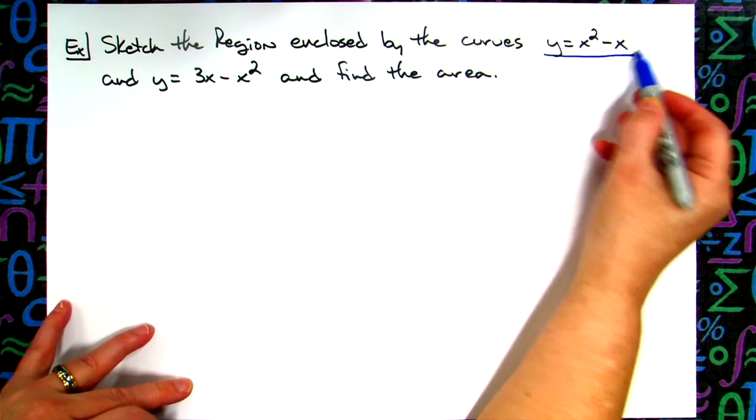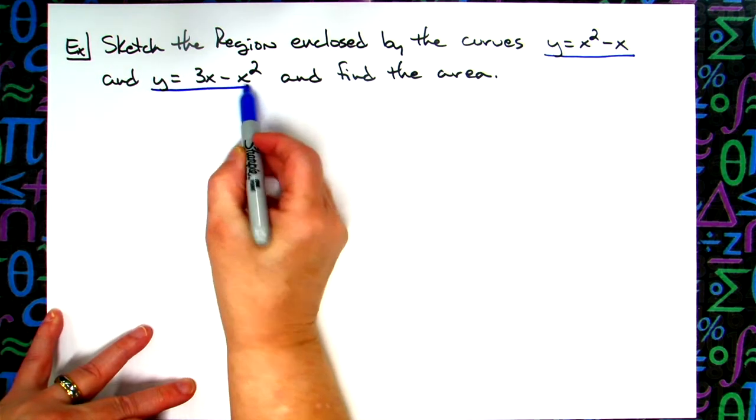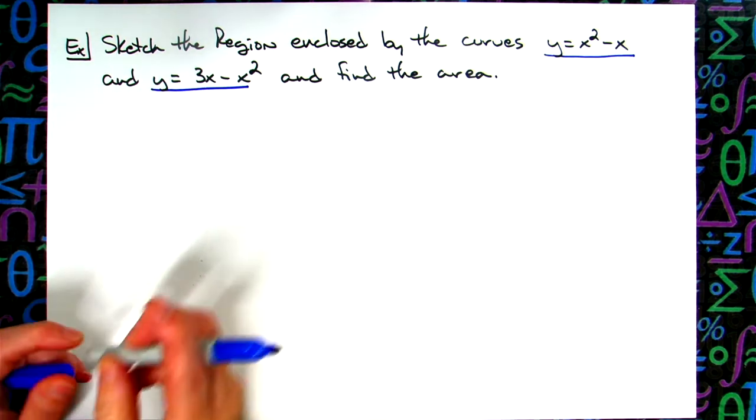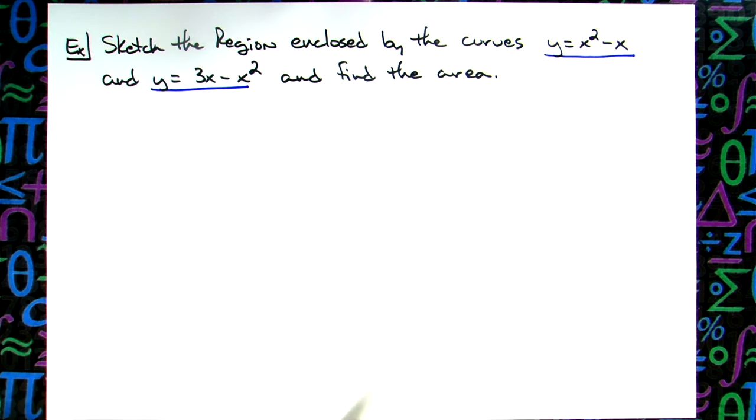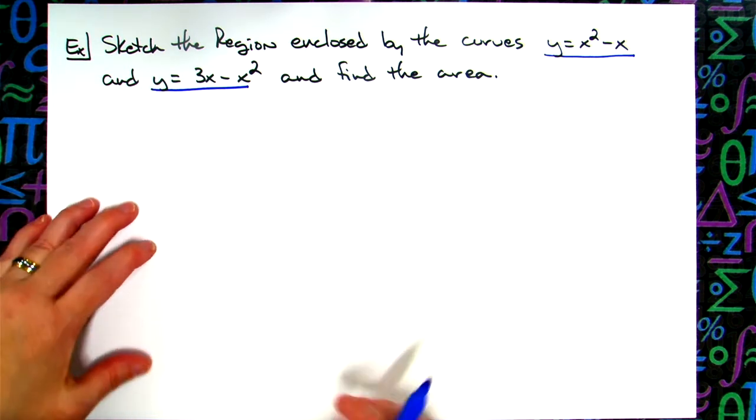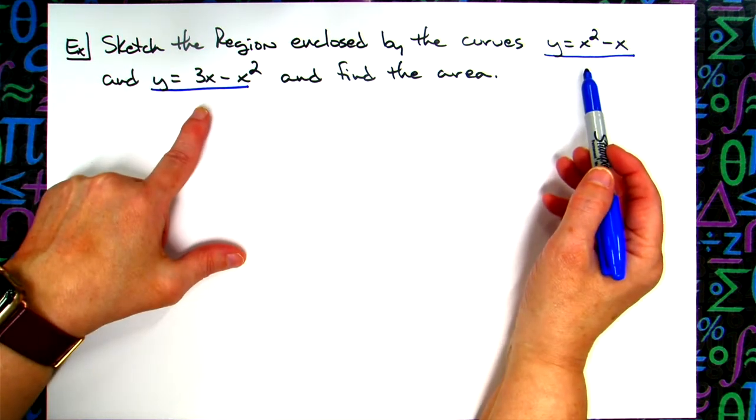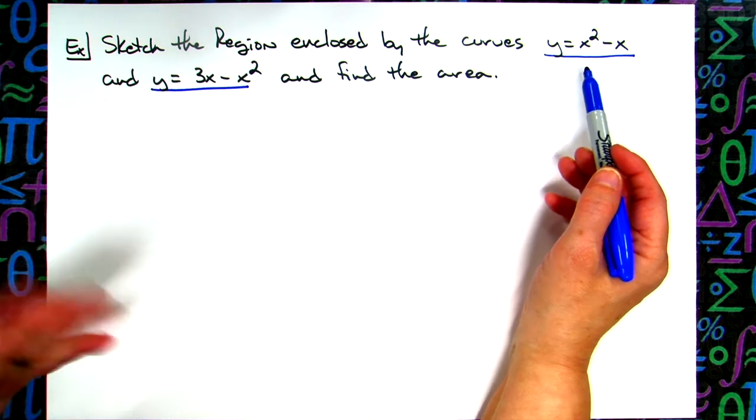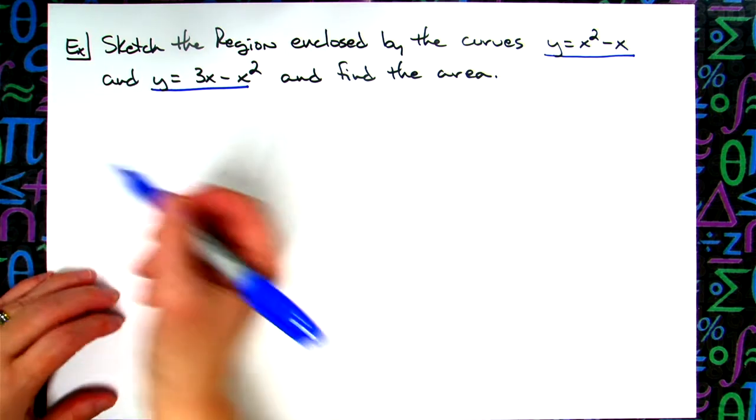We've got an upright parabola right here. We have an upside-down parabola right there. Now actually before I go to sketch it I think I am going to go ahead and find my points of intersection. That may make the sketch go just a little bit easier here.